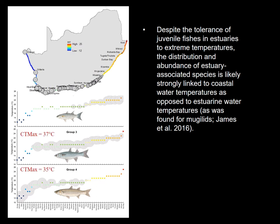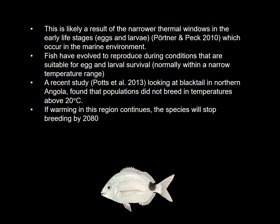It is unlikely that warm waters in estuaries are limiting distribution because fish were able to tolerate temperatures of 35 degrees during their juvenile phase. This is likely a result of the narrower thermal windows in the early life stages — eggs and larvae — which occur in the marine environment. Fish have evolved to reproduce during conditions suitable for egg and larval survival, normally within a much narrower temperature range than juveniles and adults. A recent study on blacktail in northern Angola found that populations did not breed in temperatures above 20 degrees Celsius. This species uses estuarine and marine nursery areas, and if warming in this region continues, the species will stop breeding by 2080.